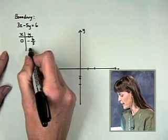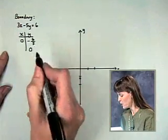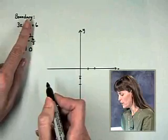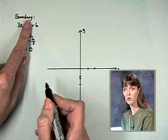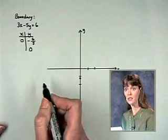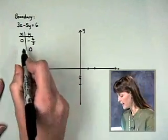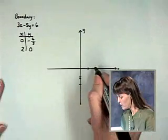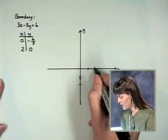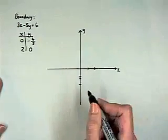If we let our y value equal 0, then we are evaluating the equation 3x equals 6, and that gives us a value of 2. So the x-intercept is at 2, 0.